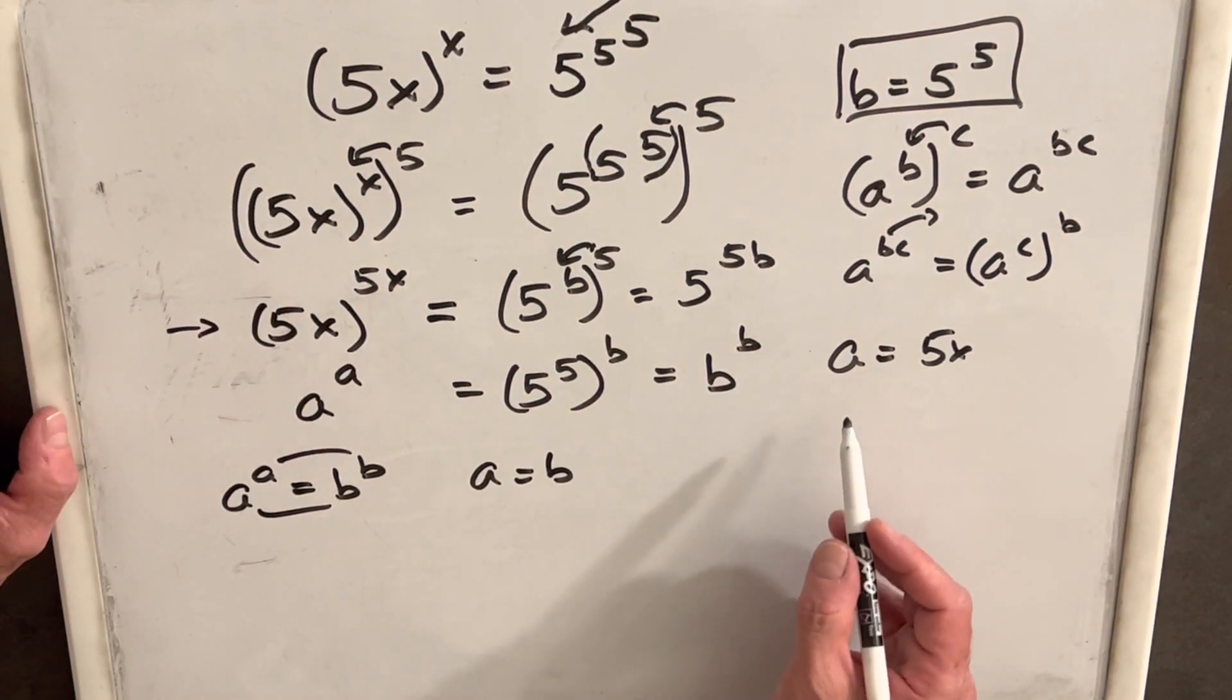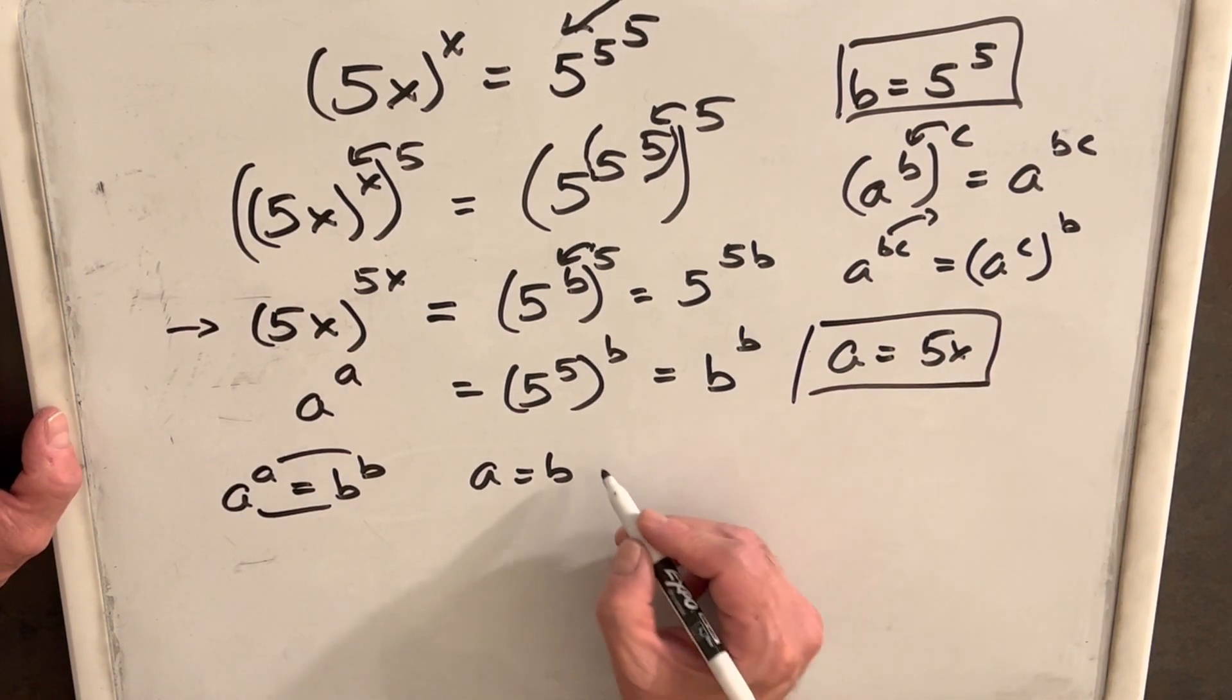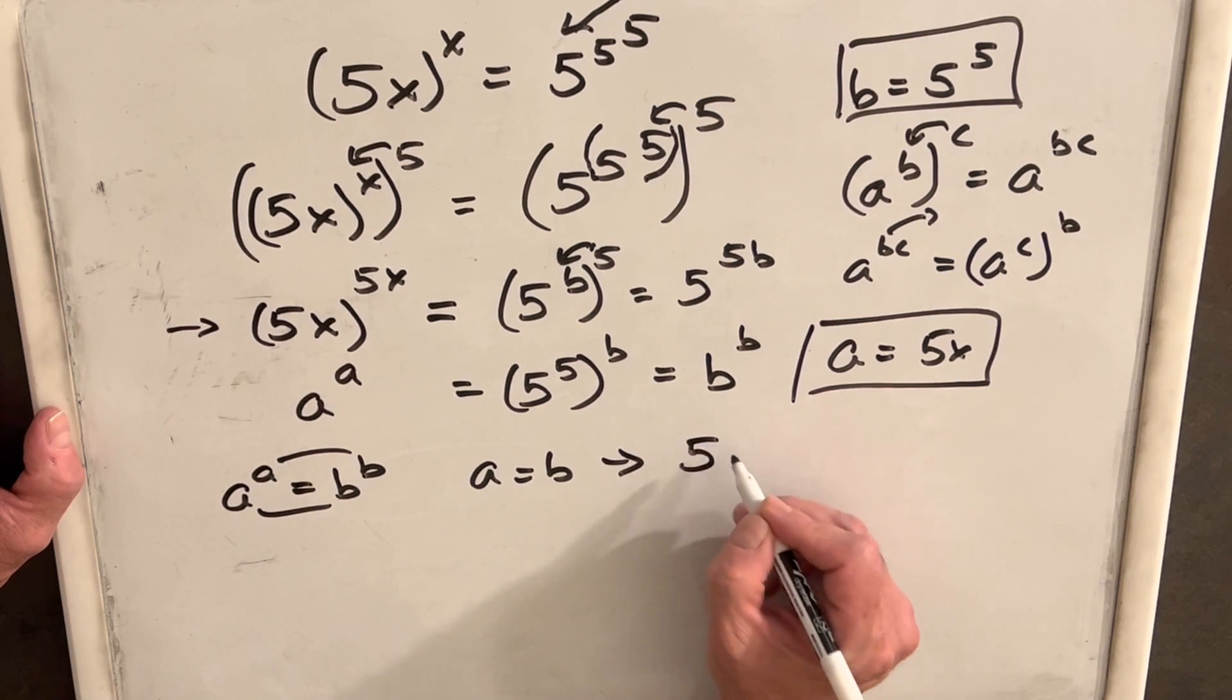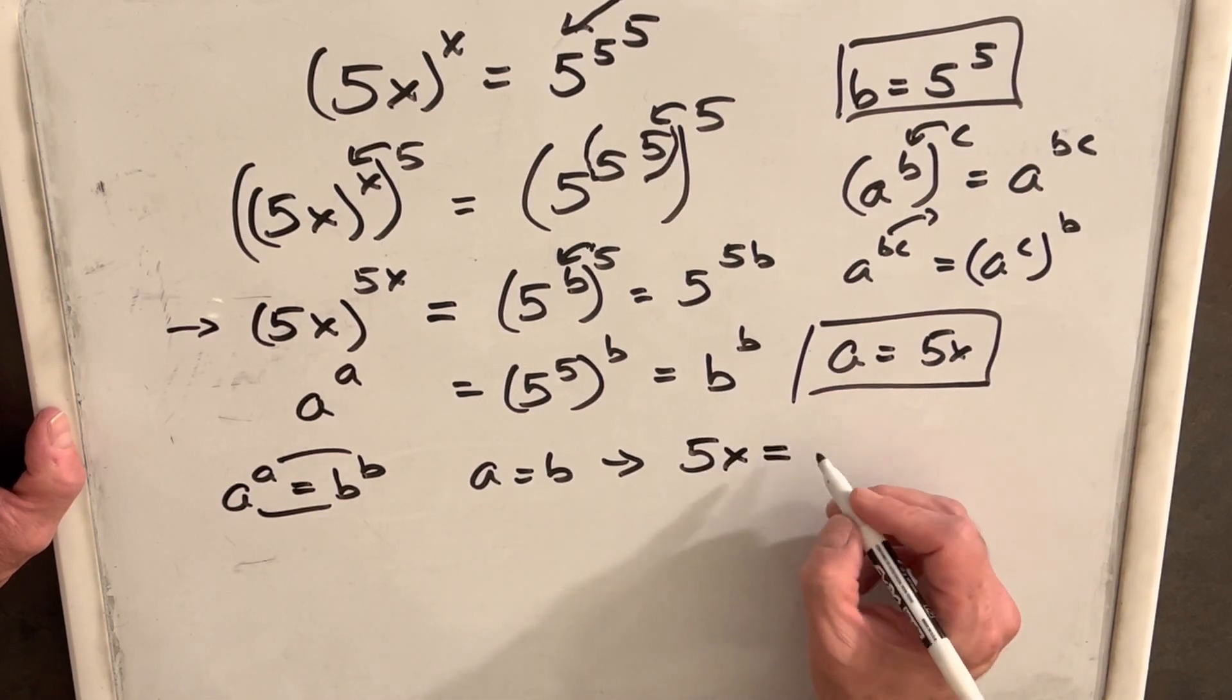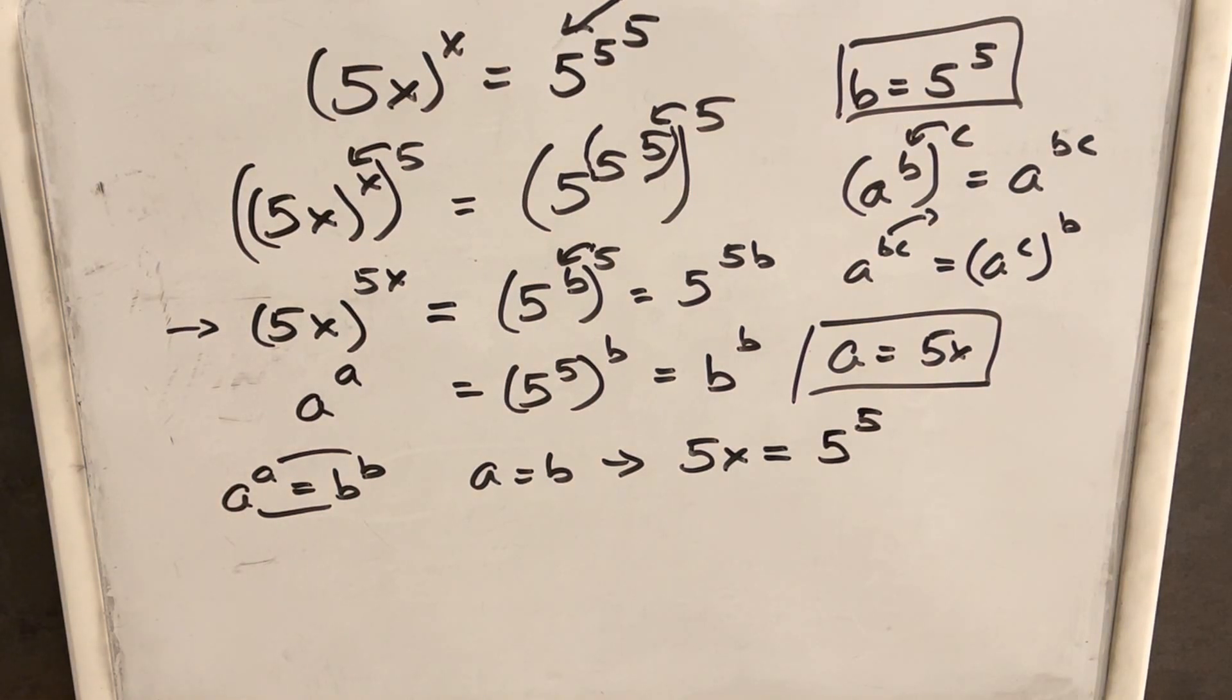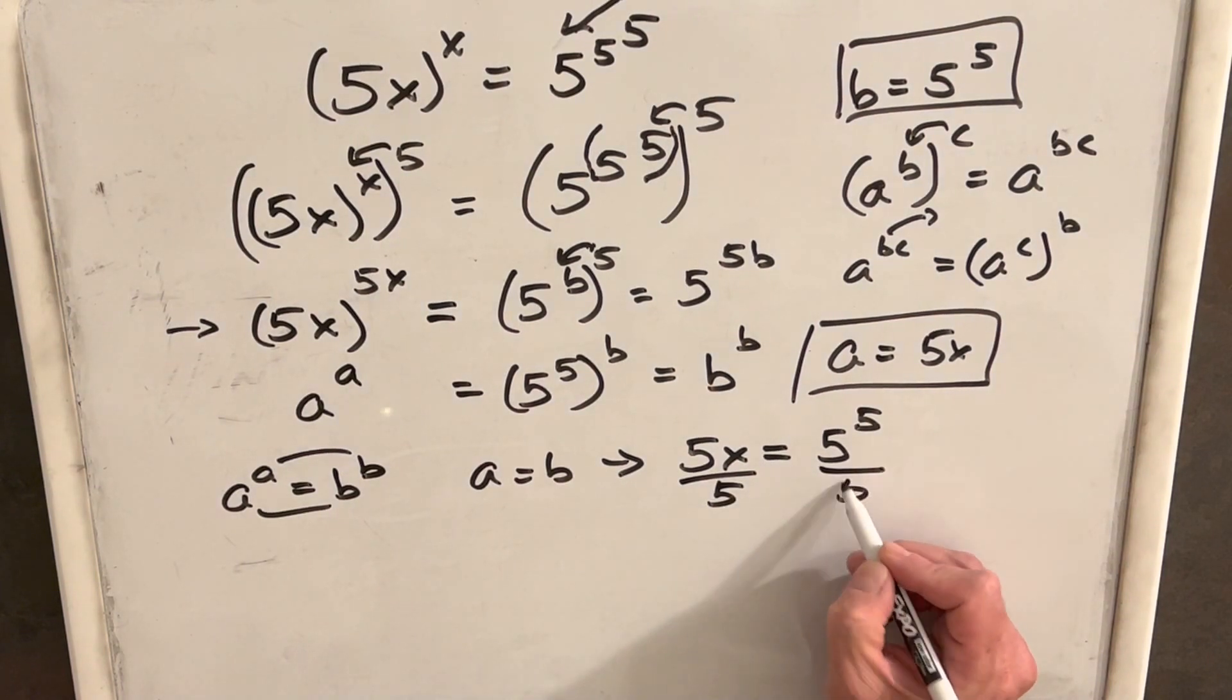But now we know what a and b is. We're saying this means we can substitute back and we can say that 5x equals 5 to the 5. We almost have our answer. We just need to divide both sides by 5.